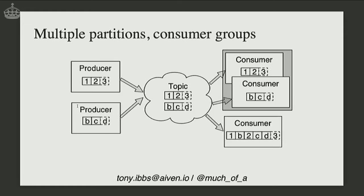We can group consumers together. With two partitions — one producer sending to the top partition and one to the bottom — a standalone consumer gets messages in some order, correctly ordered per producer but with no ordering between producers. Consumers sharing the same consumer group share the reading: each only gets messages from one or more partitions. If there are more partitions than consumers, one consumer may read from more than one partition, but that will be predictable.